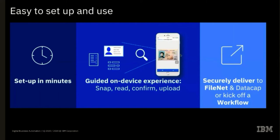As a recap, what we just showed you is that this is a pretty easy-to-use tool that can be set up in minutes. We know that for a lot of mobile cases, we want to test and make sure these things work, so we wanted to provide an easy way to do that quickly to get adoption within your business. On the device, you saw the technology we're leveraging to snap, read, confirm, and upload all of the information — automatically capturing the highest quality image, reading most of that information off the document the business selects, and then allowing the user to verify that information. We spend less time going back to the user asking them to correct their social security number, and more time actually starting the business process. Finally, we can securely deliver this information onto FileNet, onto DataCap if you need further processing, or to start kicking off a workflow.